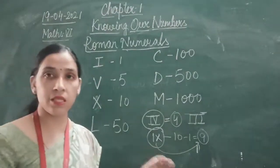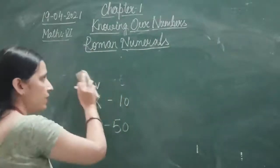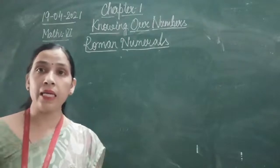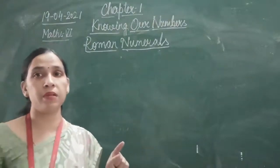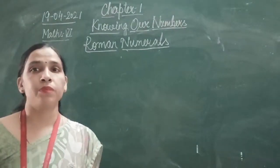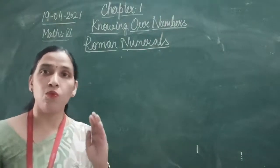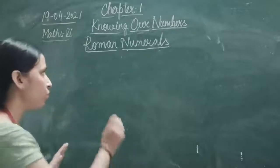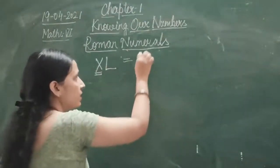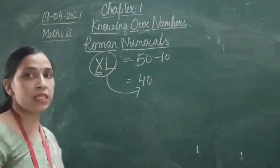Let me summarize once again. I can be subtracted from V and X. From L and C, you can subtract only X. Whatever is written before a symbol will be subtracted. If before L I write X, then X is subtracted from L: 50 minus 10 = 40. So XL is the symbol for 40. If I write LX, then X is added to L: 50 plus 10 = 60.